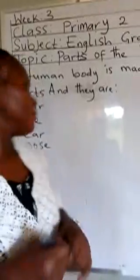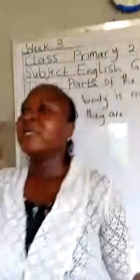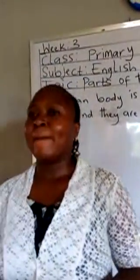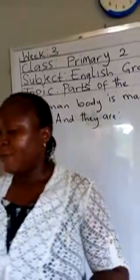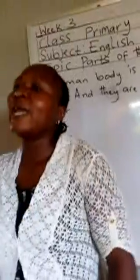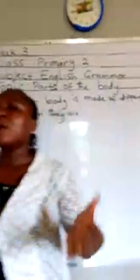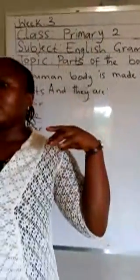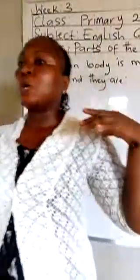The next one is mouth. Show me your mouth. This is my mouth. Open your mouth — ah. What do we do with our mouth? We talk with our mouth. We also eat with our mouth. The next one is neck. Show me your neck. This is my neck. The neck carries the head around. Another one is shoulder. Touch your shoulder. This is my shoulder. They are all part of the human body.